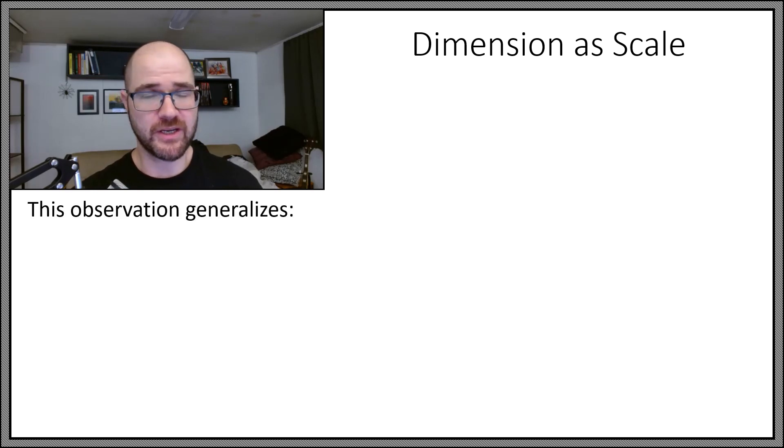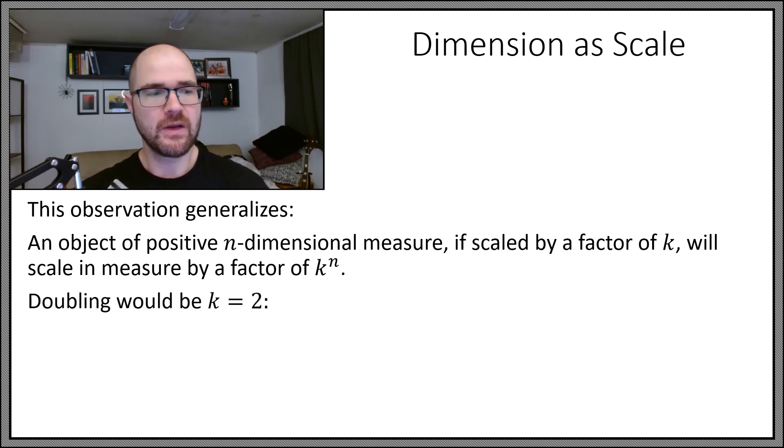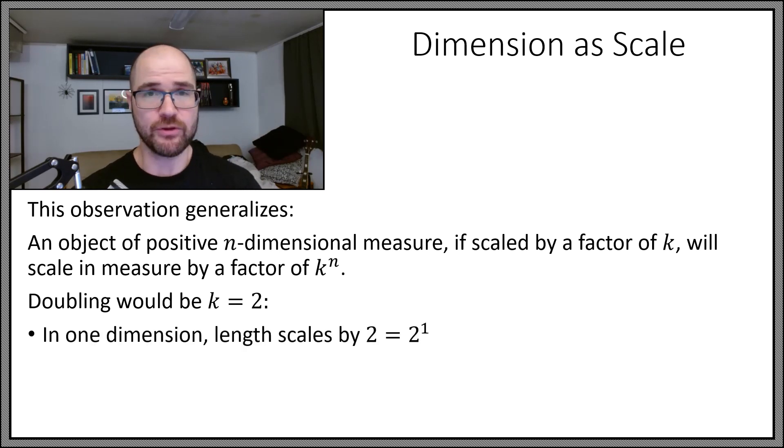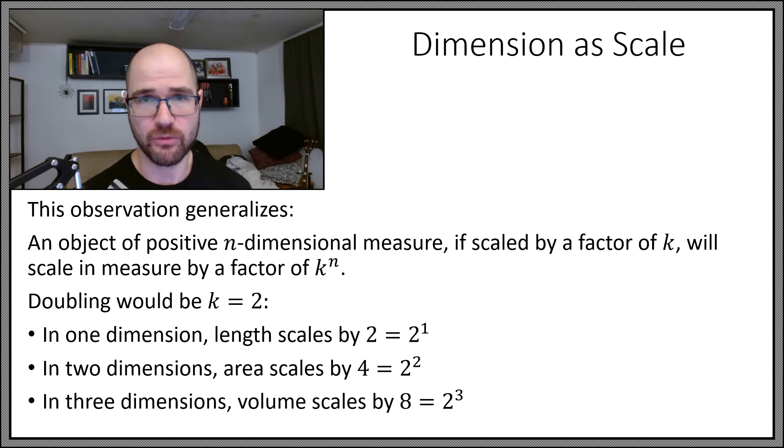So this observation can kind of generalize. If you have an object of positive n-dimensional measure, if it's scaled by a factor k, then its measure will scale by a factor of k to the n. The dimension is the exponent used here. So doubling, for example, would be k equals 2. So if I scale everything by k, I double, that makes it 2. In one dimension, you just double, you multiply by 2 to the first. But in two dimensions, it gets scaled by 2 squared, or 4. And in three dimensions, 2 cubed, or 8.